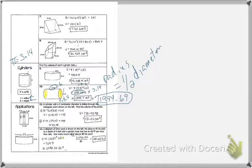Not everyone has a scientific calculator, and if you don't know how to access the scientific calculator on your phone, just use 3.14 for pi.